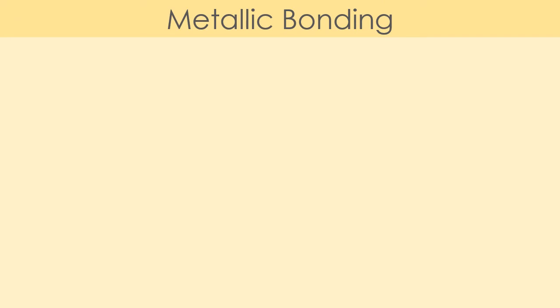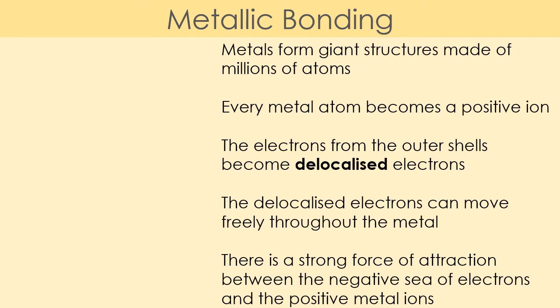There will be a lot of information on this page so feel free to pause and go through it if you need to. When we have metals, they form a giant structure made of millions of atoms. Each one of those atoms becomes a positive ion — they lose the electrons in their outer shell, and those outer-shell electrons become what we call delocalized. Delocalized means they are not attached to any particular atom anymore and those delocalized electrons can move freely throughout the metal.